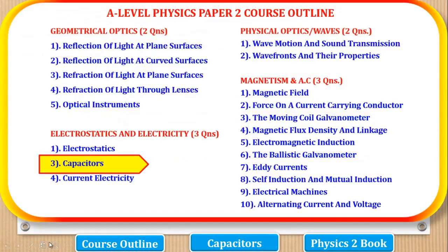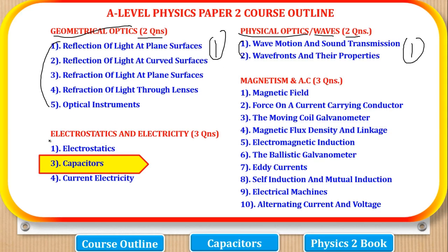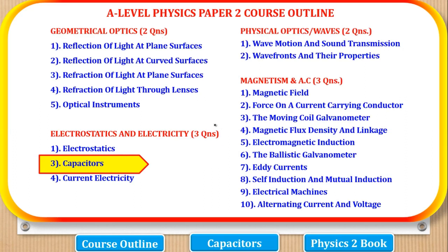Before we start, let's look at the course outline for this paper. Physics paper 2 is divided into 4 parts: geometrical optics, where 2 questions come and a student must answer 1; physical optics or waves, also 2 questions, answer 1; electrostatics and electricity, where 3 questions come; and magnetism and alternating current, where 3 questions come. You choose to answer 2 from one section and 1 from the other to make the required 5 questions. We already covered electrostatics and now we are on capacitors.